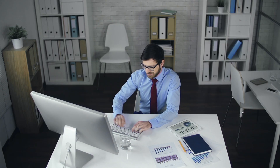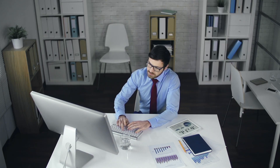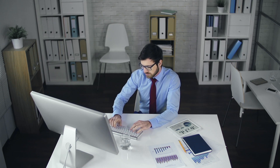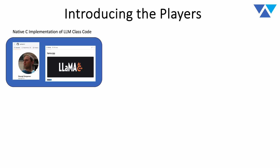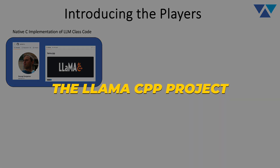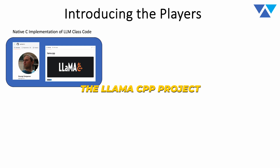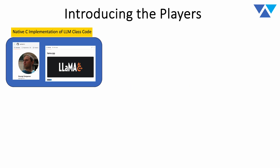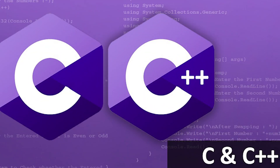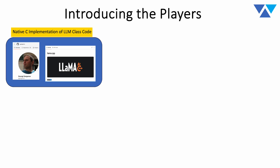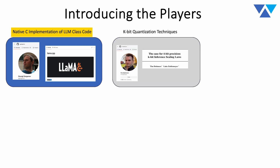Let me introduce the players — these are ninjas, these are 10xers, some of the true developers and innovators in the AI world. First, there's Georgi Gerganov, the pioneer behind the llama.cpp project. All of this has happened over the course of the last year. It is a very high performance native C and C++ implementation of LLM class code — it works for LLaMA but it works for most decoder-based models.